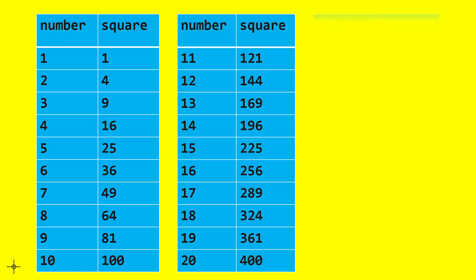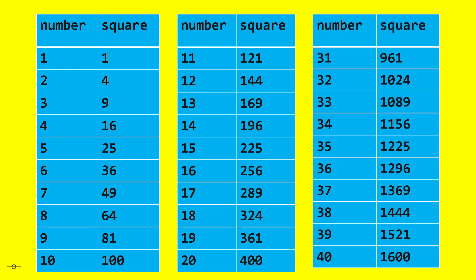Let's look at the unit digits of squares: the square of 1 ends in 1, 2 ends in 4, 3 ends in 9, 4 ends in 6, 5 ends in 5, 6 ends in 6, 7 ends in 9, 8 ends in 4, 9 ends in 1, and for any number ending in 0, the square has double the number of zeros.